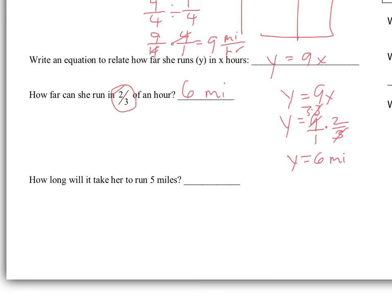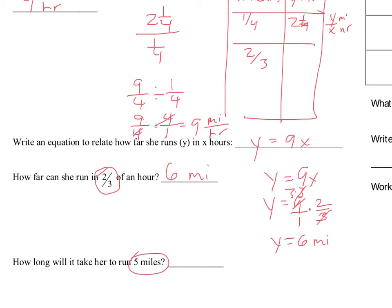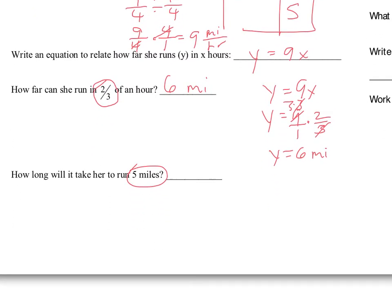Over here we have a situation where we're asked to find out about five miles. That goes in the Y column since we're talking about Y miles. Using the equation, I'm going to be plugging in for Y: five is equal to nine X. Dividing both sides by nine as the inverse operation — nine divided by nine gives me one — so X is equal to five-ninths of an hour.